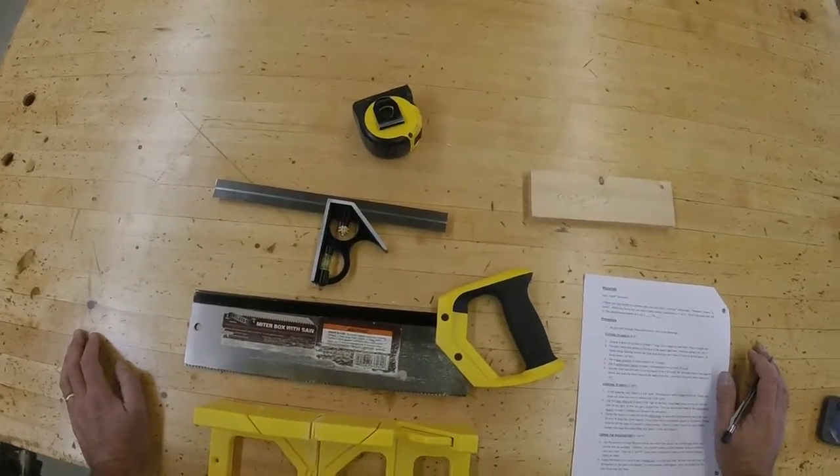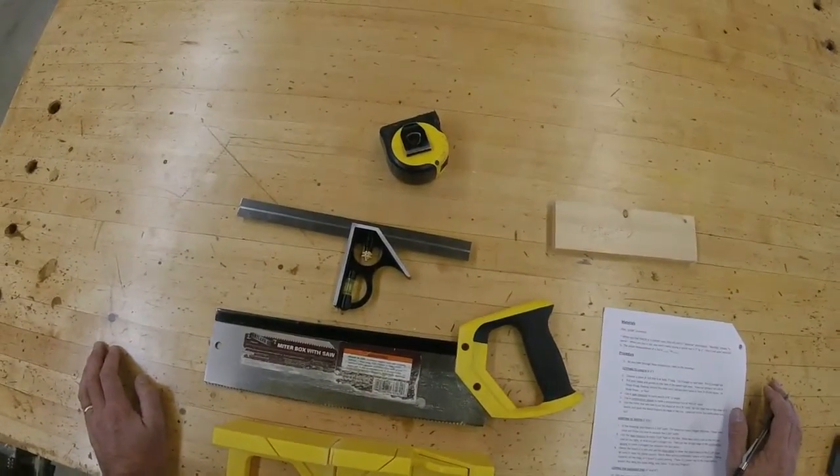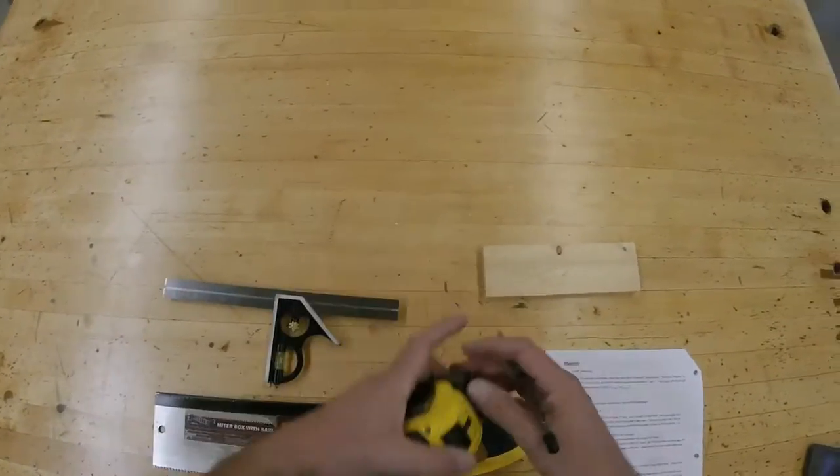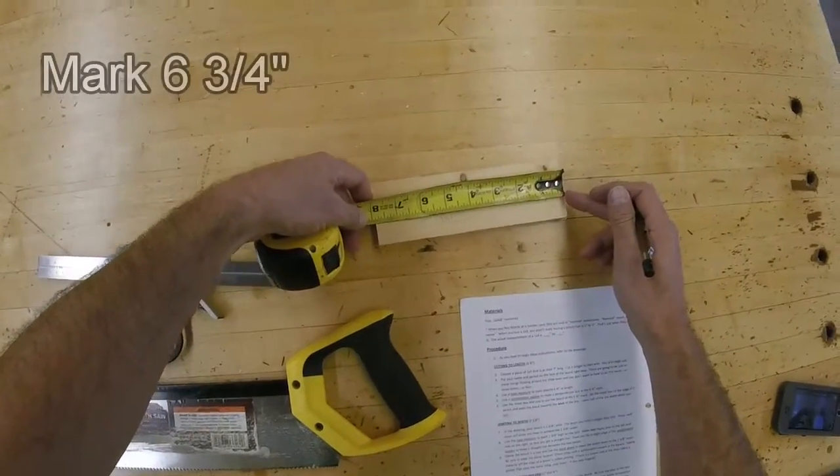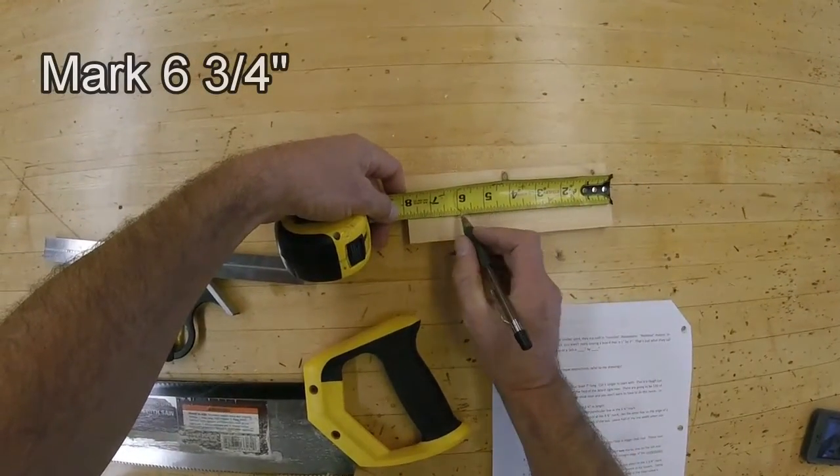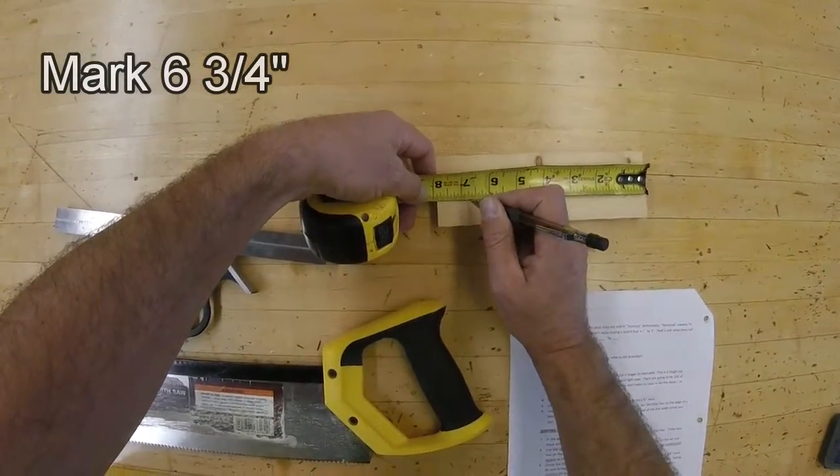Step 4: Use a tape measure to mark exactly 6 and 3/4 inches in length. I'm right-handed, so I'm going to do this upside down. I hook my tape measure here and I measure back 6 and 3/4 of an inch.